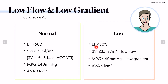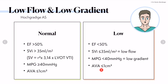In the low-flow, low-gradient situation, you have a reduced ejection fraction and a reduced stroke volume index — below 35 milliliters per square meter, calculated from the LVOT signal. That is the low flow. The mean pressure gradient is below 40 mmHg — that is the low gradient. And the aortic valve area, which doesn't fit the other findings, is below one square centimeter. This is a paradox: there is low flow, a very small aortic valve area, but the gradient cannot be achieved, so we need to think further.